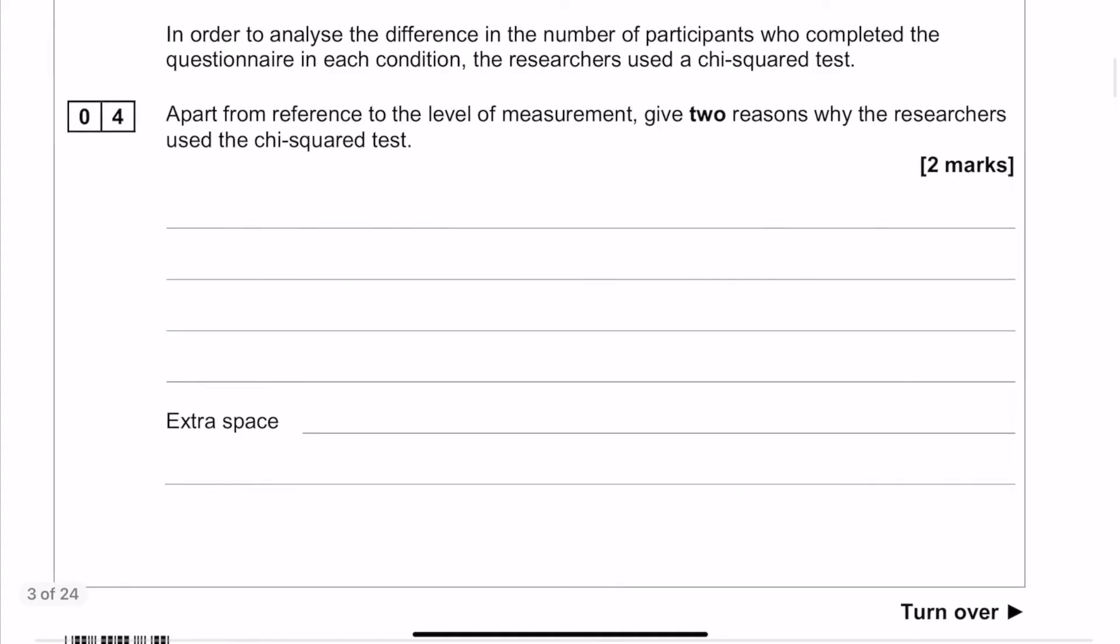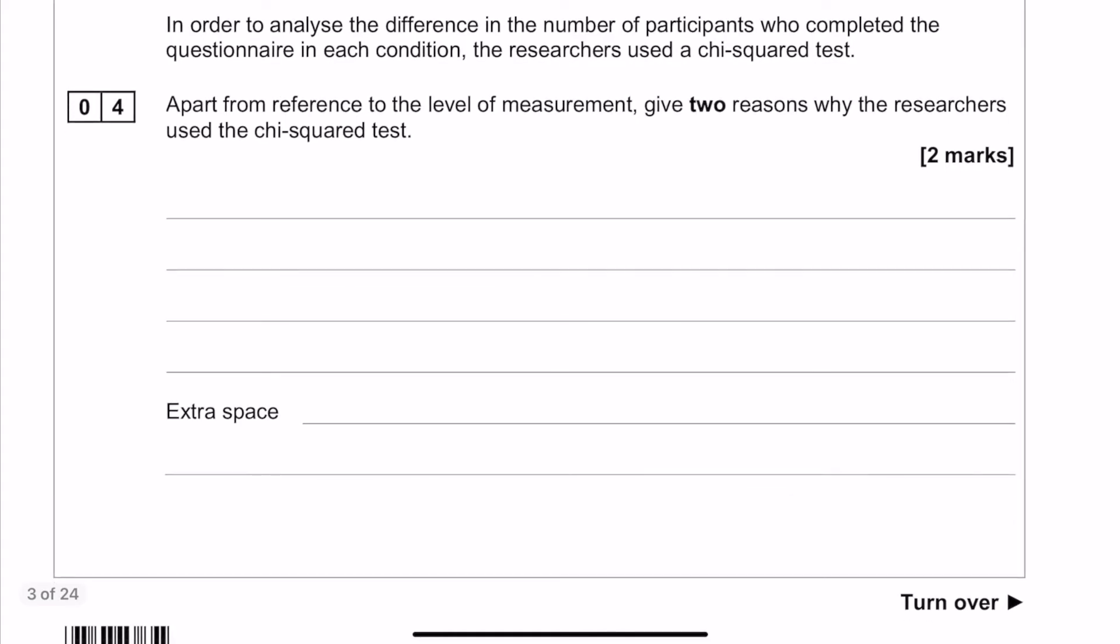The final two questions are on statistical testing. So here's the first one. They're asking you why they've chosen a chi-squared test. They've thrown a little bit of a spanner in the works because the question specifies that you're not allowed to reference levels of measurement. So we're not allowed to talk about the fact that it's nominal data.